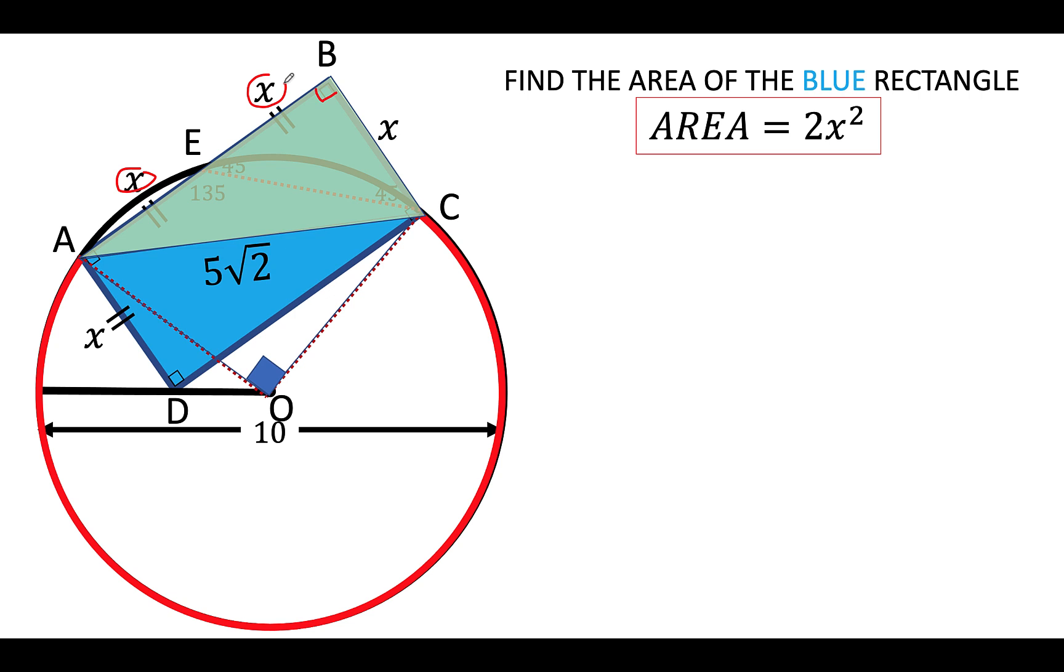So using now the Pythagorean formula the second time, the square of this leg, x², plus the square of the other leg, which is this part, is equal to the square of the hypotenuse, 5√2. So simplifying, 2² is 4, the square of the square root of 2 is 2, so 25 times 2 is 50.